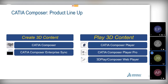Looking at the product lineup: CATIA Composer consists of two modules. The first is CATIA Composer — the interactive authoring tool. The other is CATIA Composer Enterprise Sync, a server-based module that can convert, update, and derive 2D data automatically on the server. This module can be integrated into your PLM system to convert and update data and publish content based on status changes.